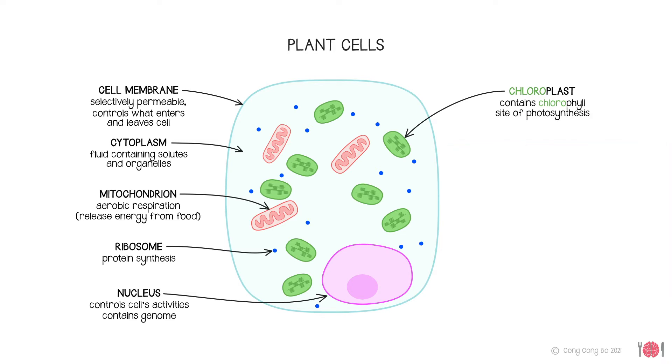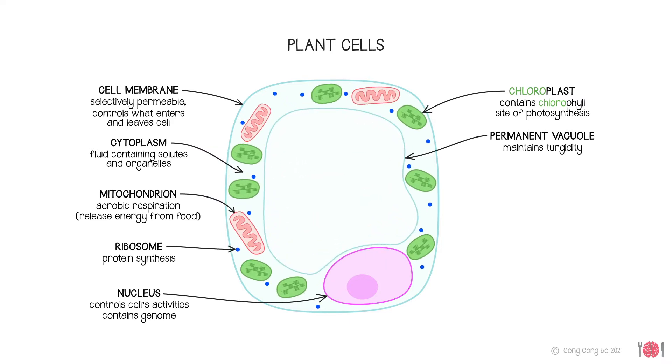In the centre of plant cells is a large central permanent vacuole, a sac of fluid which helps to support plants structurally and acts as a temporary storage of sugars, amino acids and other substances.